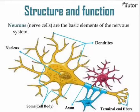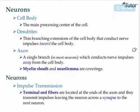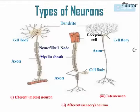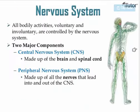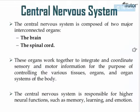Your nervous system is divided into two parts: a central nervous system and a peripheral nervous system. The central nervous system is formed of the brain and the spinal cord. The peripheral nervous system is all parts of the nervous system that are not the brain or the spinal cord.